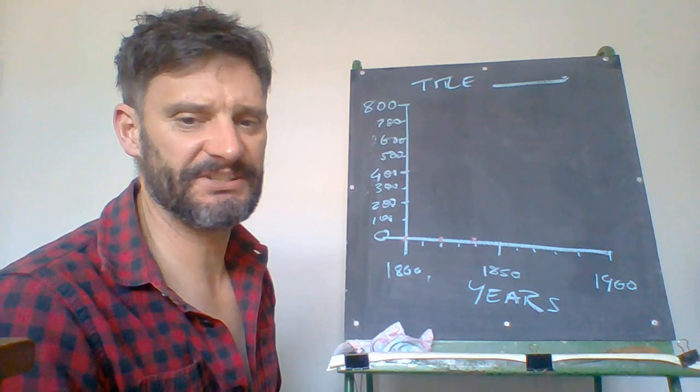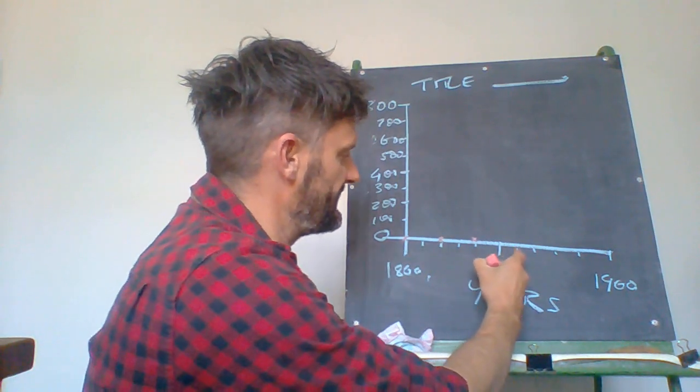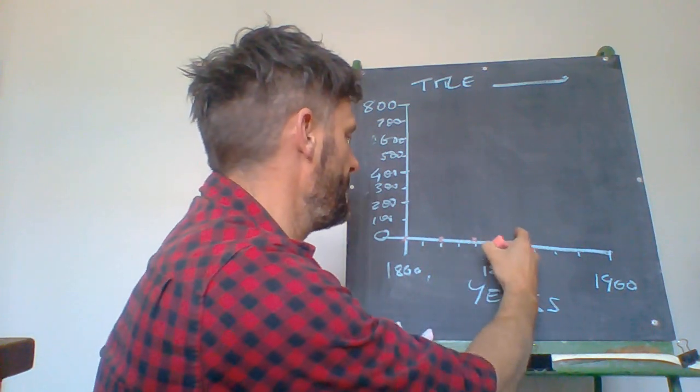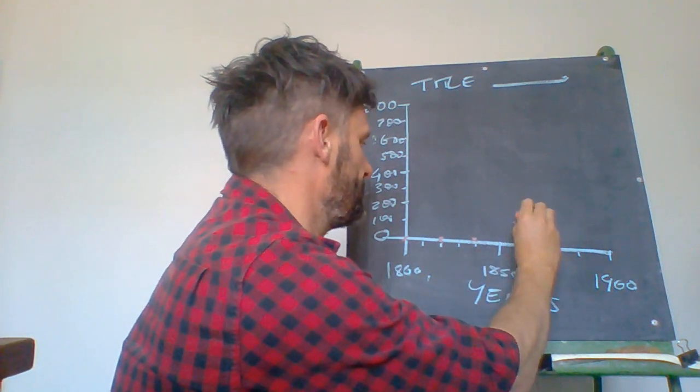The next one is 1860. So 1850, 1860 and all of a sudden we're now up to 100,000 people. Now we go there, that now registers on our graph.